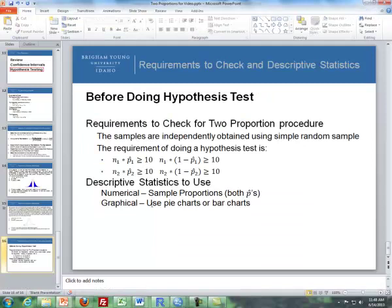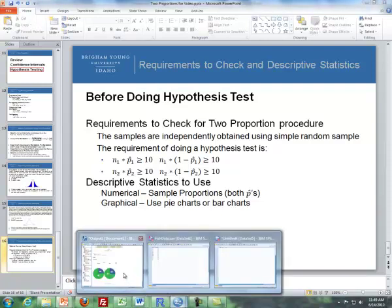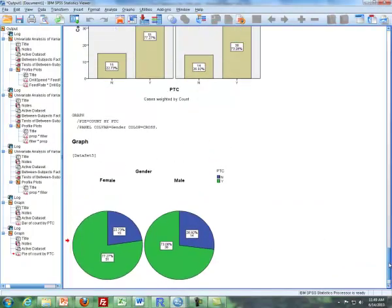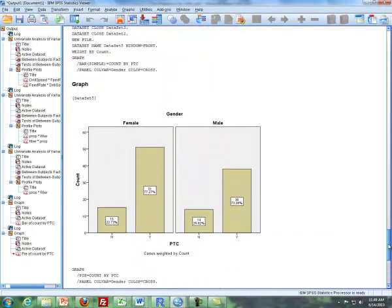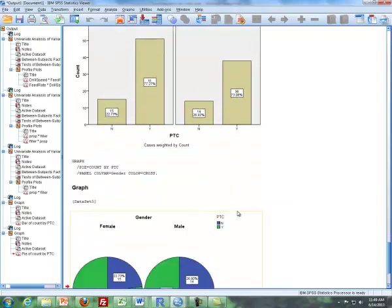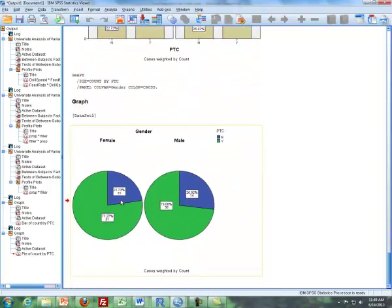And then our descriptive statistics, numerically, are both p-hats, and then we use a pie chart or a bar graph. I showed this to you earlier, and I probably should have showed you something else in the confidence interval slides, but this is back to the PTC. This is for females who taste PTC versus males. And so we have a bar graph for each of those separately. And I have listed the percentages as well as the frequencies for each. And then I have the same thing as well for a pie chart. We have one pie for females and one for males. And that concludes the videos dealing with two proportions.